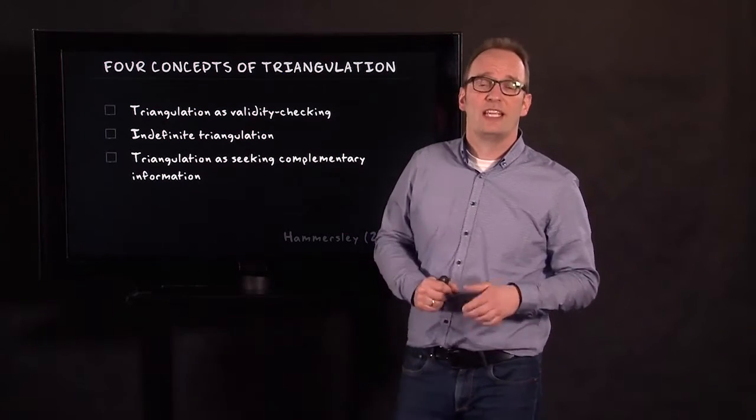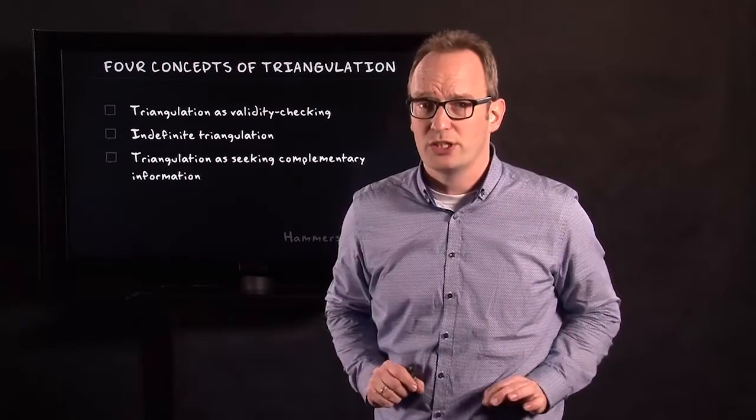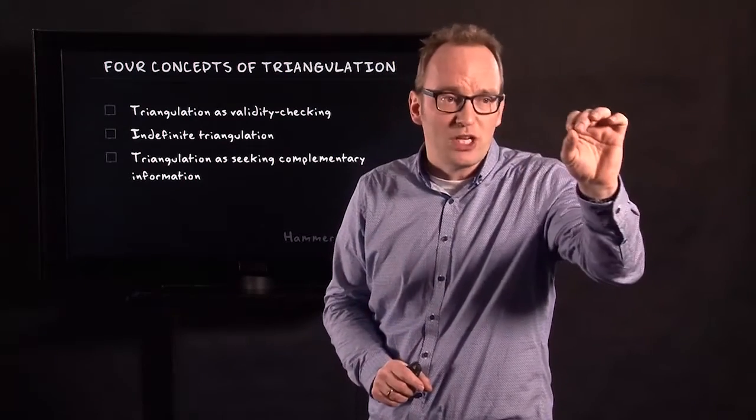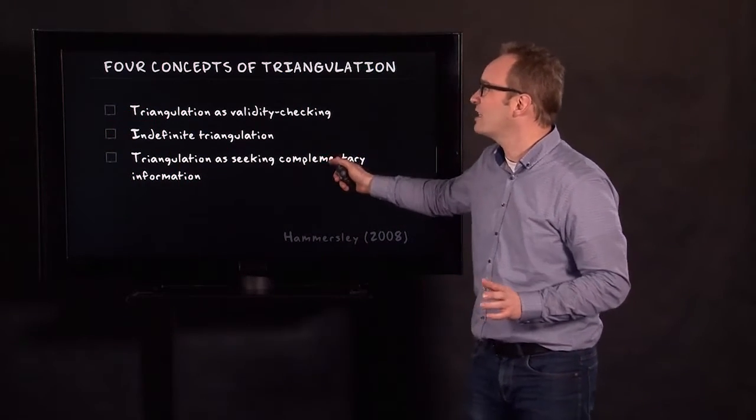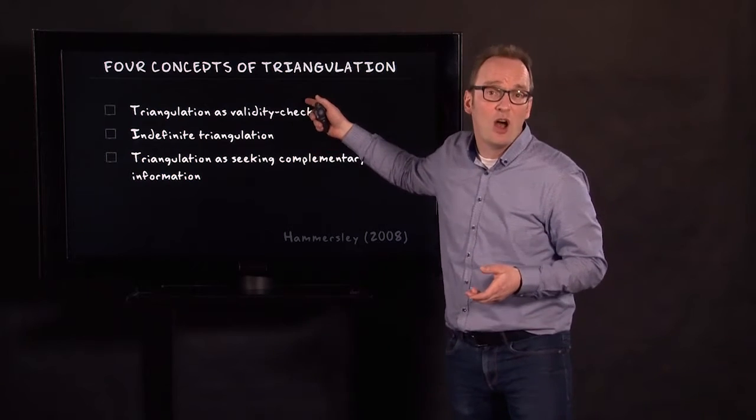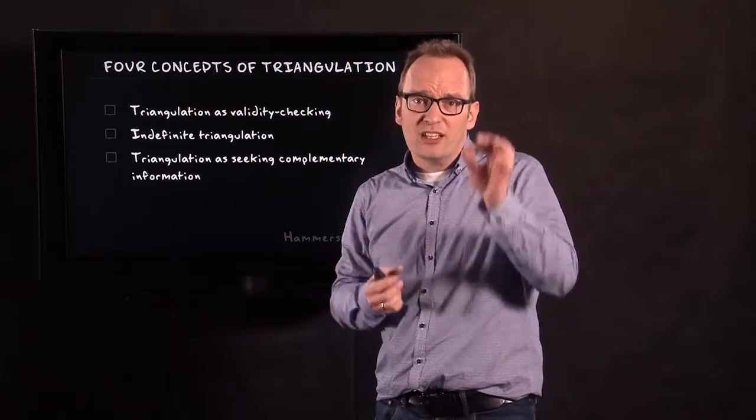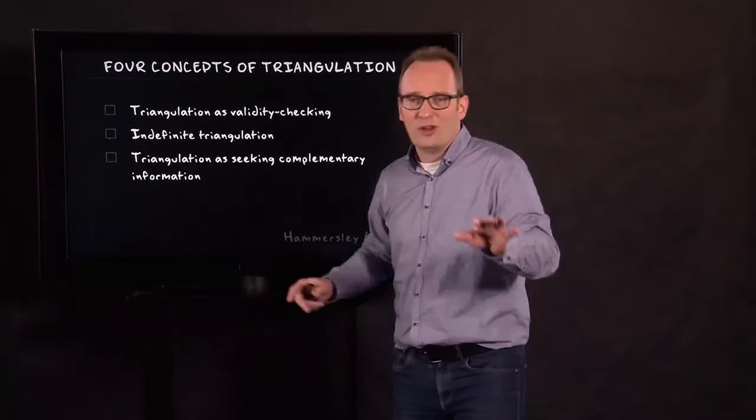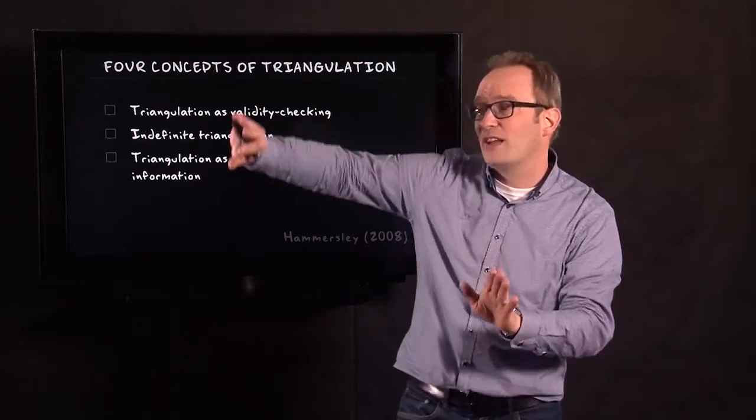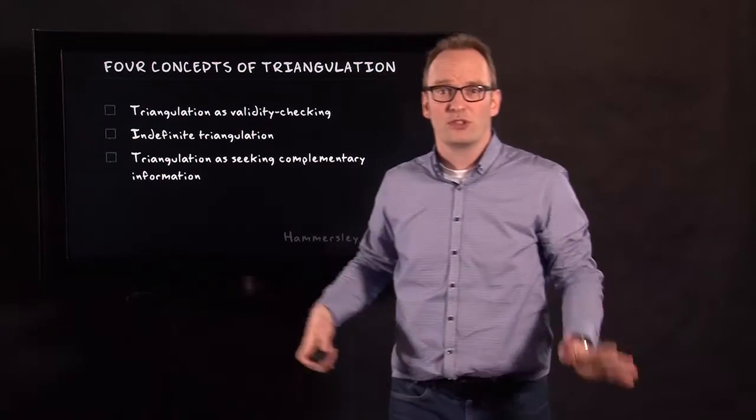The third type of triangulation is triangulation using different research questions. So, a different research question for the interview as for the observation, for instance. And you can see this as some sort of a critique of the first type of triangulation, the type of triangulation that seeks for a truth value. Because here it says, well, maybe we cannot find the exact truth, but we can find different views on it or complementary views on it.